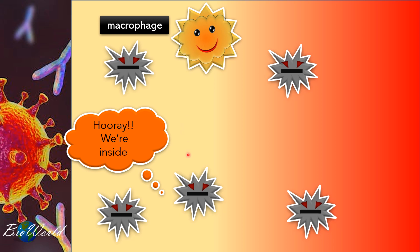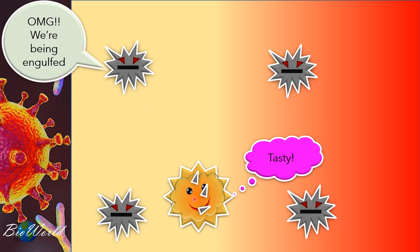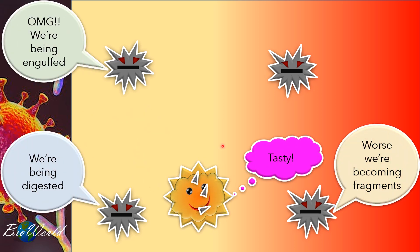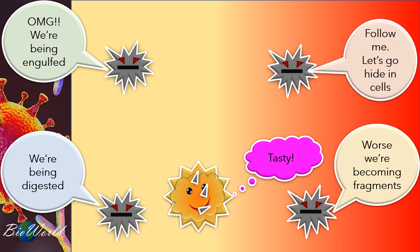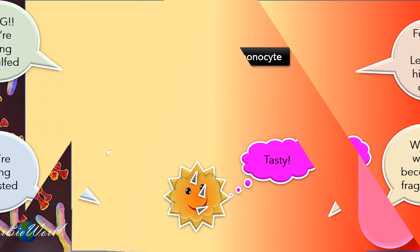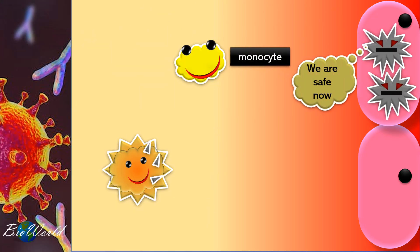When a macrophage encounters a pathogen, it will engulf the pathogen and digest it into tiny fragments. However, some of the pathogen will still be able to infect body cells. When the pathogen infects a cell, they are temporarily safe. This is because macrophage will not be able to detect them — macrophage can only identify and carry out phagocytosis on pathogens that are circulating in the body fluid.